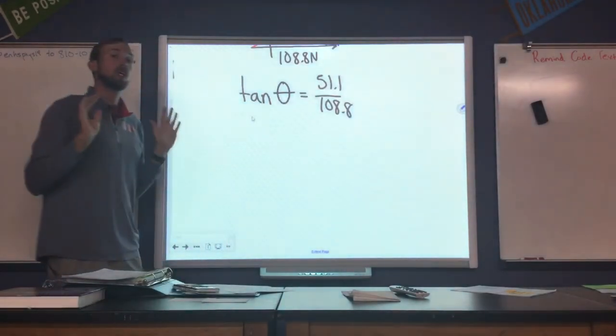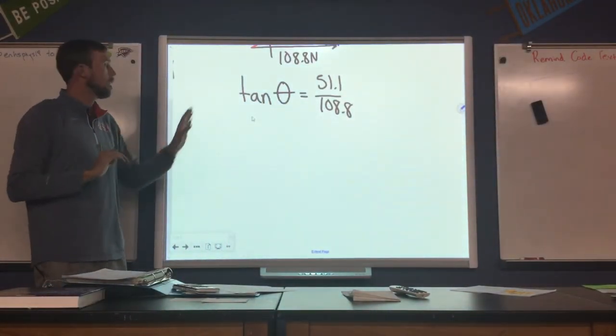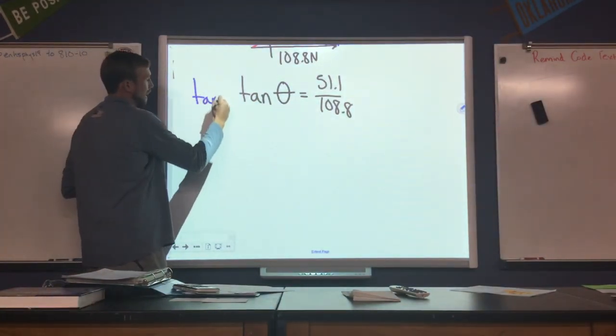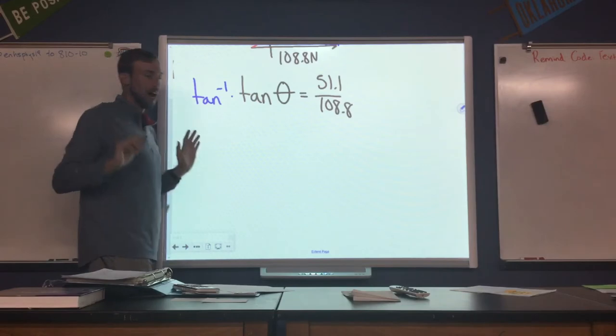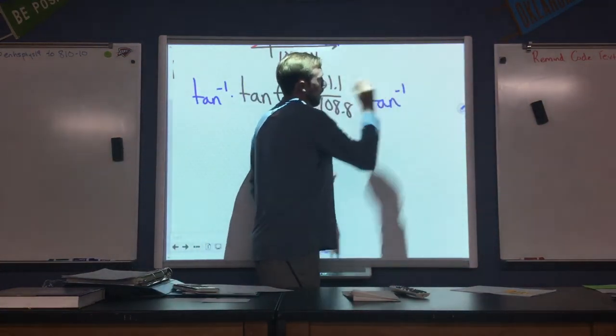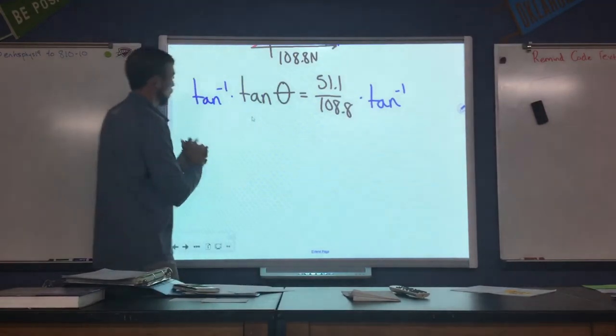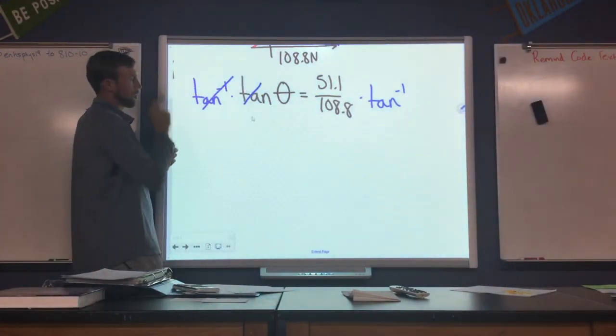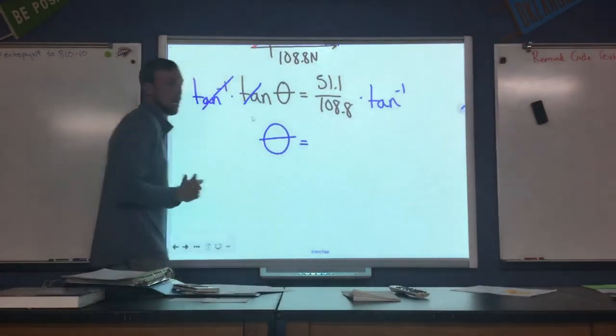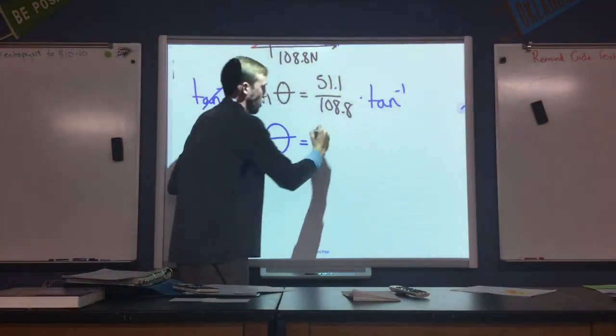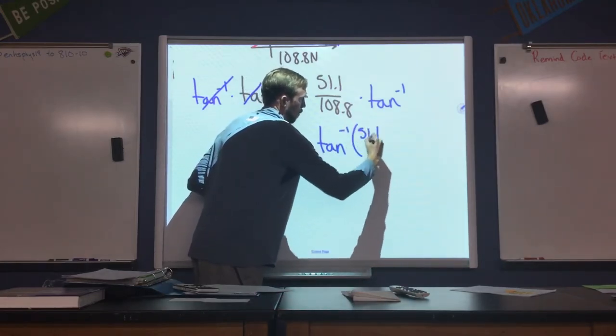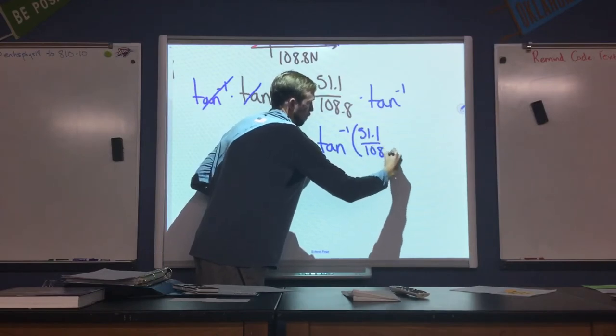Now we want in this equation to get the tangent off of the theta so we can get theta by itself. So I'm going to multiply by inverse tangent. I'm not going to divide. And the way that we undo a trig function is by multiplying by the inverse. So we have tangent multiplied by inverse tangent. Our expression will now resemble theta. Our angle is equal to inverse tangent of 51.1 over 108.8.